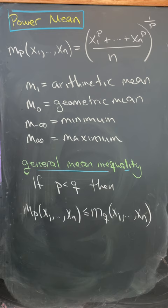Via a limit, you can define the zeroth case to be the geometric mean. And also via limits, the negative infinity case and the positive infinity case are the minimum and the maximum respectively.